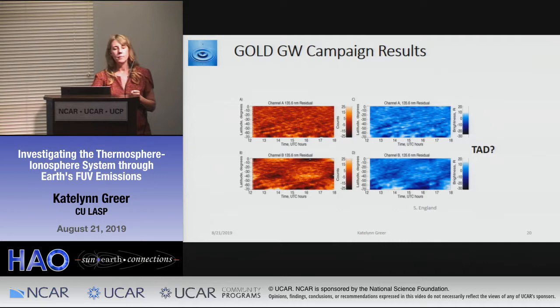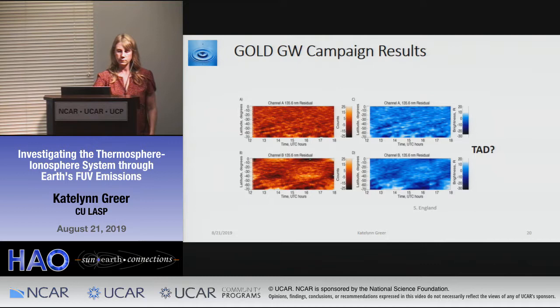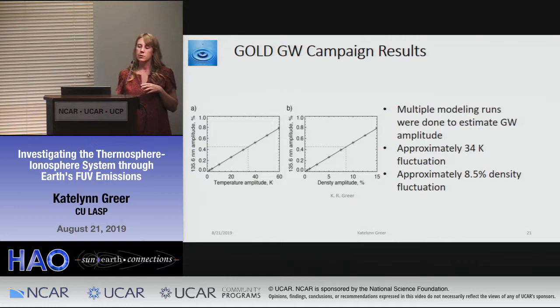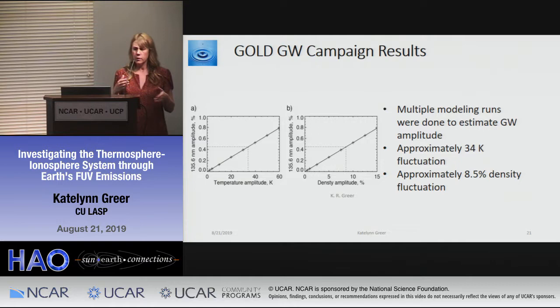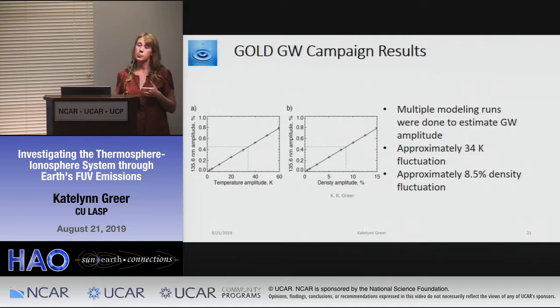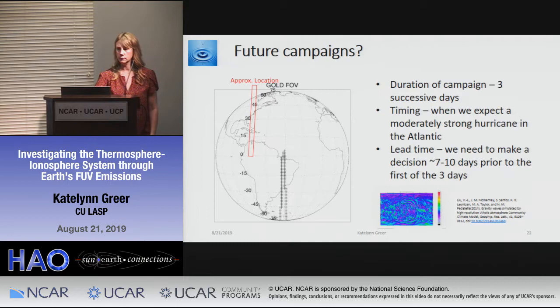The travel speed is consistent with a medium-scale TID. Using modeling, we estimated the brightness amplitudes correspond to about a 34–35 Kelvin temperature fluctuation and roughly an 8.5% density fluctuation — only about a 1% fluctuation in GOLD brightnesses. That's quite small, which is why we need specialized campaign modes to stare and improve signal-to-noise ratio.